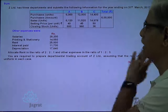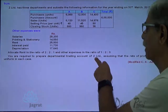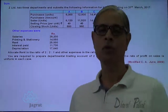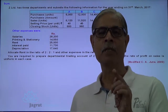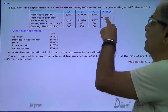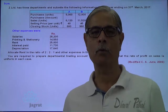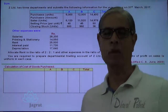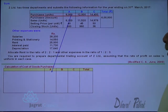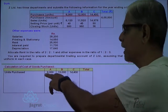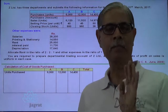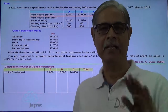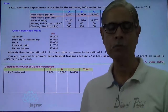The ratio 1:2:3 is used to allocate other expenses. We are required to prepare the departmental trading and profit and loss account of Z Limited, assuming that the rate of gross profit on sales is uniform in each case. On the basis of this uniform rate of gross profit, we can bifurcate the 6 lakh rupees between departments A, B, and C. For that, I will first prepare a working note. The calculation is for the cost of goods purchased for each department. I write down the number of units purchased: 6,000; 12,000; 14,400. The total purchase price is 6 lakhs.